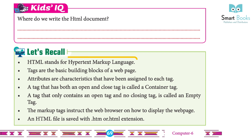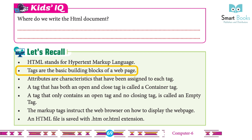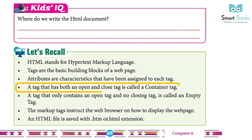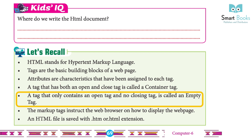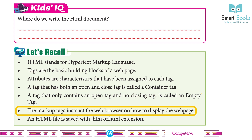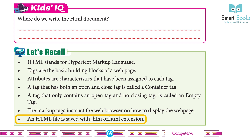Let's recall: HTML stands for Hypertext Markup Language. Tags are the basic building blocks of a web page. Attributes are characteristics that have been assigned to each tag. A tag that has both an open and closed tag is called a container tag. A tag that only contains an open tag and no closing tag is called an empty tag. The markup tags instruct the web browser on how to display the web page. An HTML file is saved with .htm or .html extensions.